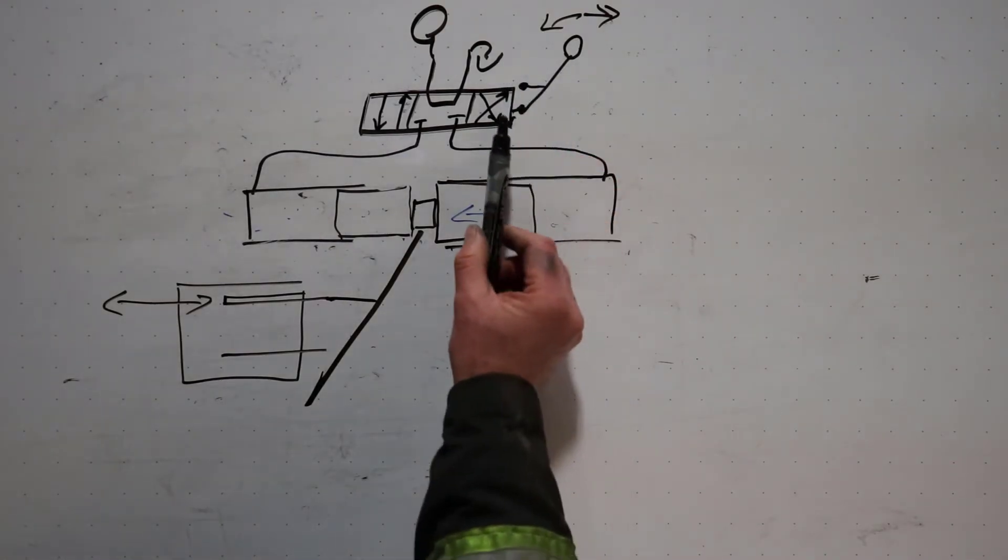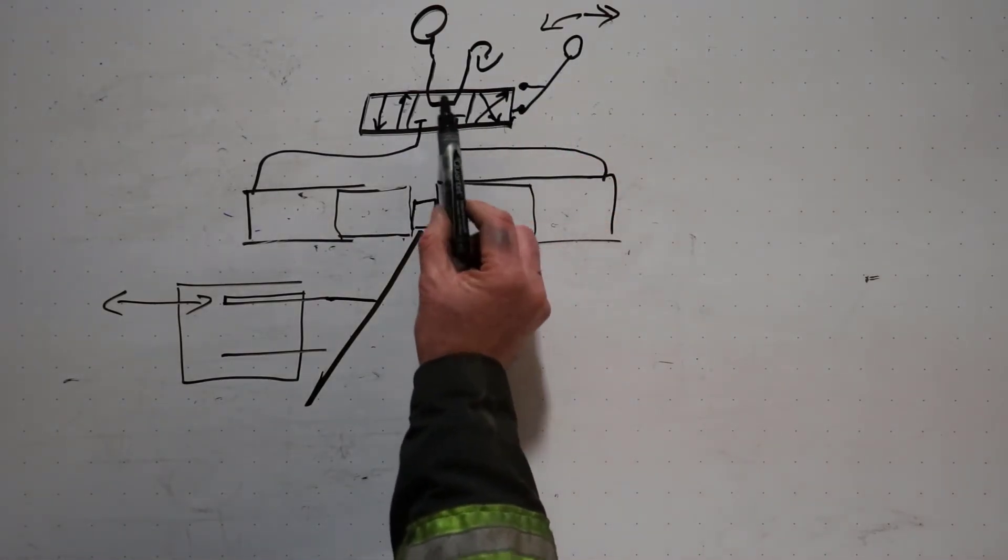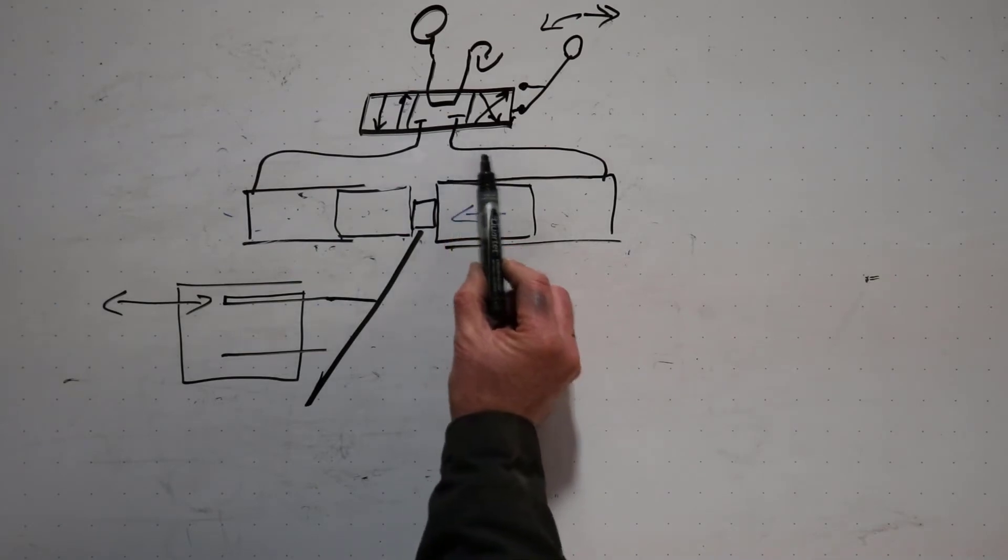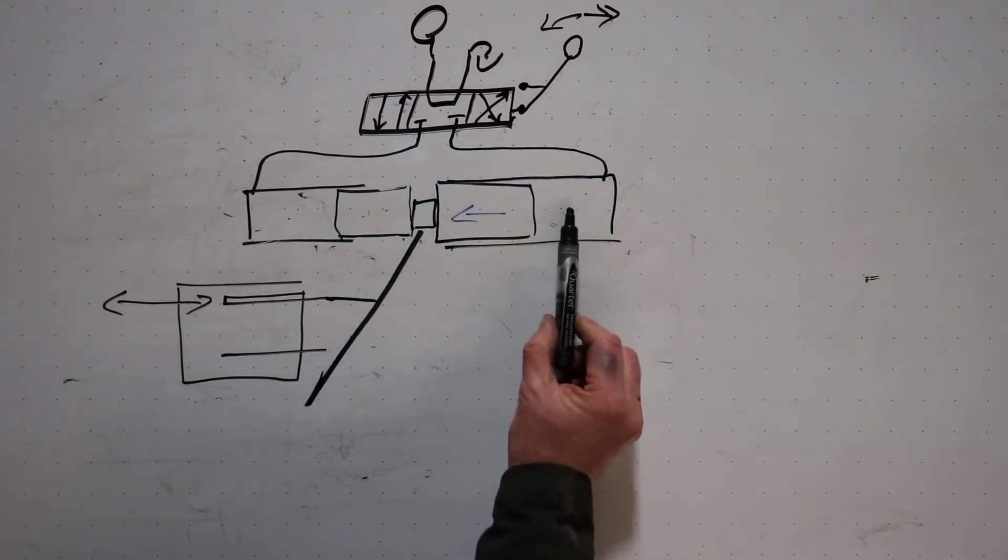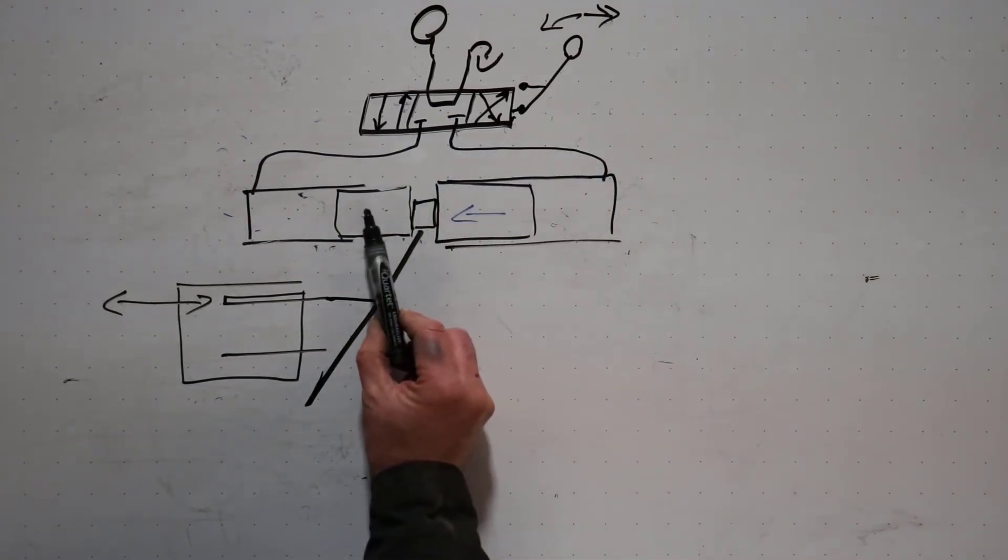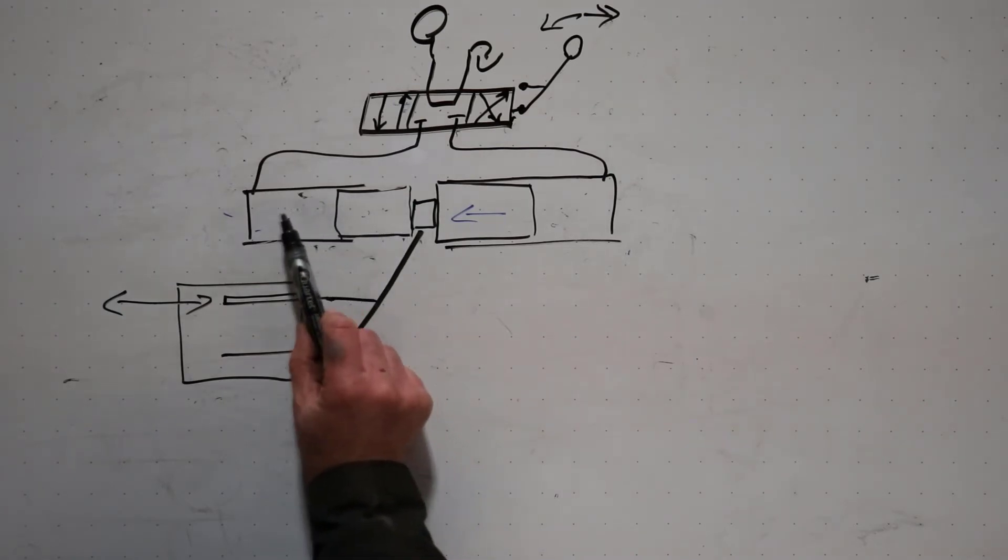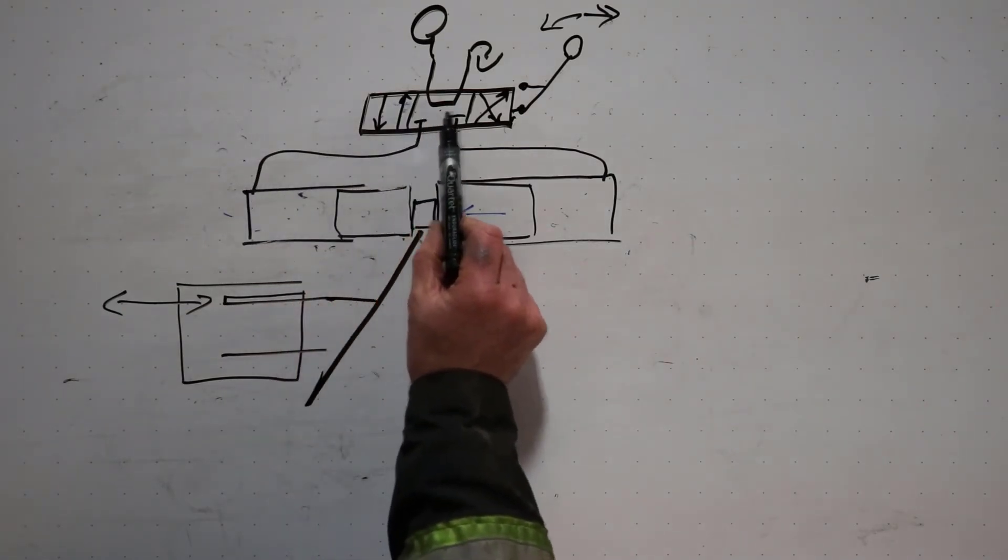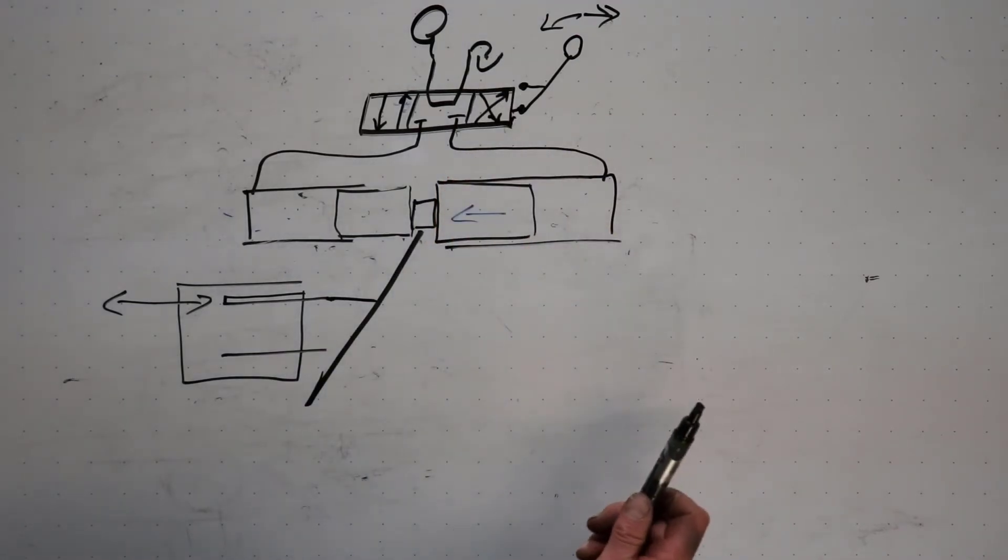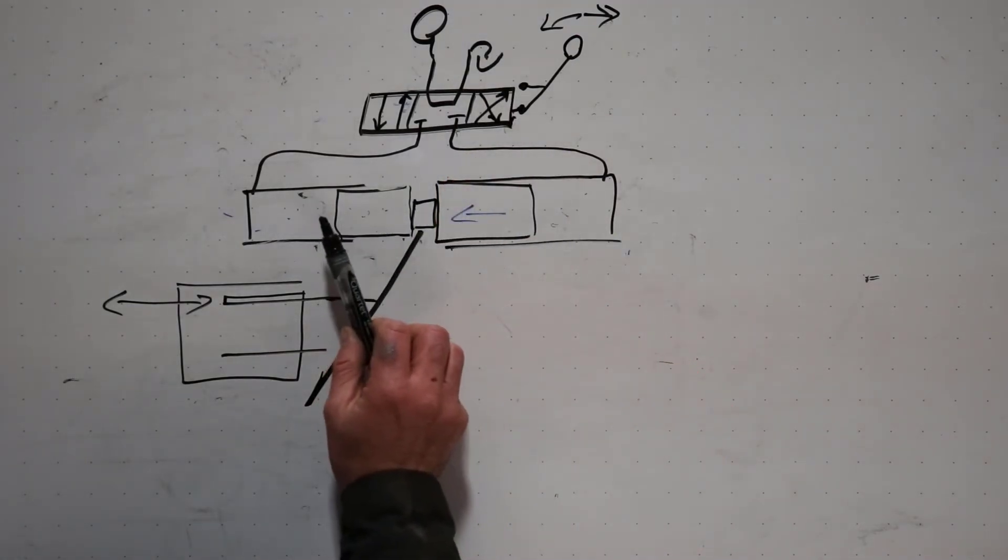If I push the lever the opposite direction and hook this envelope up here, now the oil flows into this side, flows into here, pushing the cylinder to the left towards minimum displacement. That oil can come out, crosses over, and ends back up in tank, and the cylinder moves this direction.